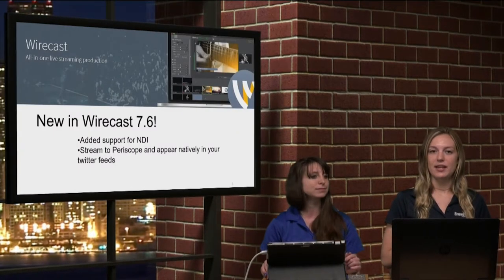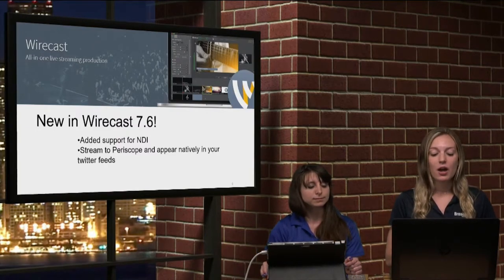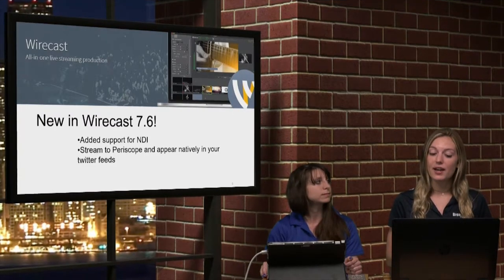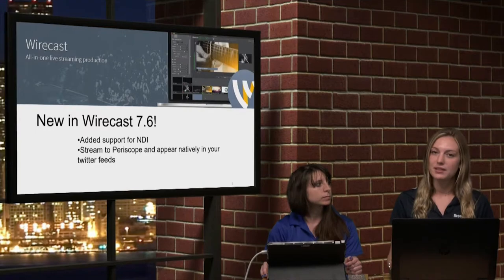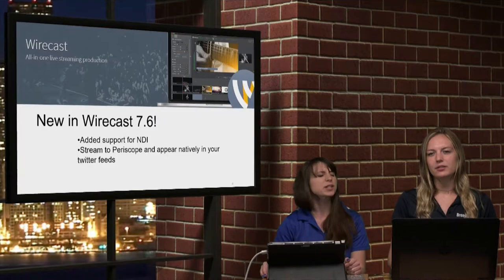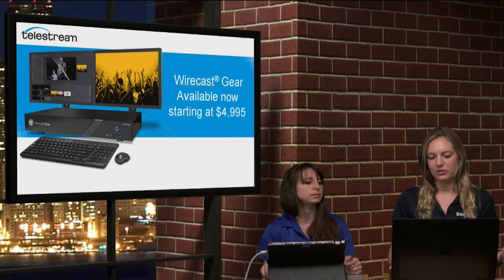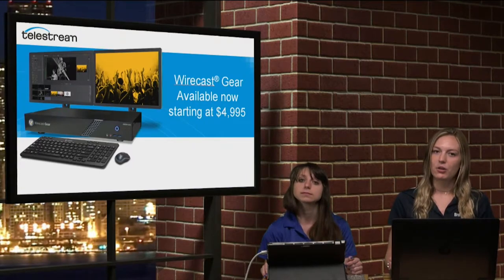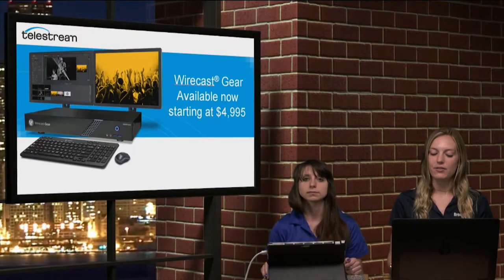At the Telestream booth — another crazy crowded booth — they have some really fun things to share. New in Wirecast 7.6: added support for NDI, because of how important and popular it's getting. You can also stream to Periscope, and it'll appear natively in your Twitter feed. Wirecast Gear starts at $4,995.